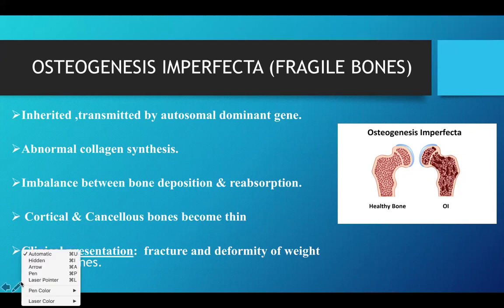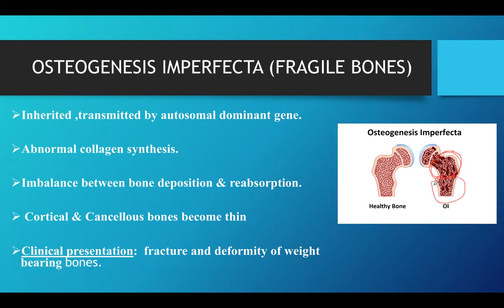In this picture, say this is a femur: this part here would be the cancellous bone, while the shaft of the femur would be the cortical bone. Cancellous bone is already softer and not as strong as cortical bone. In osteogenesis imperfecta, because of the bone deposition and reabsorption imbalance, these bones become thin over time — the cancellous bone thins first. When that becomes weak, it leads to fractures and deformity of the weight-bearing bones.